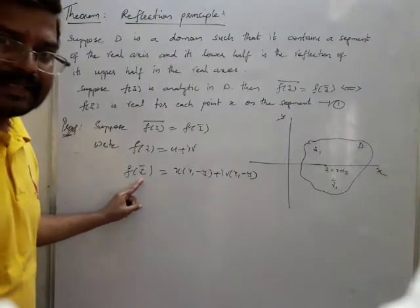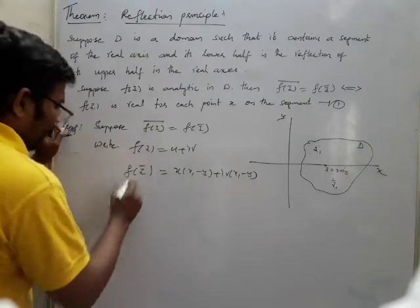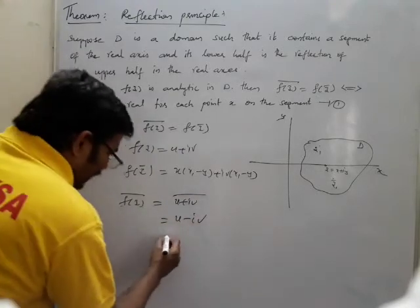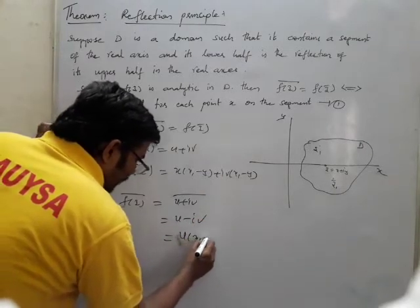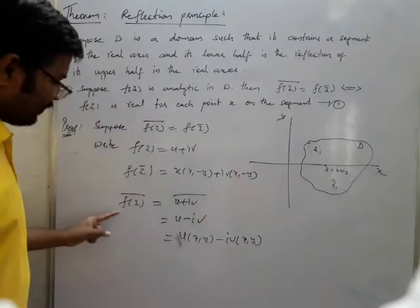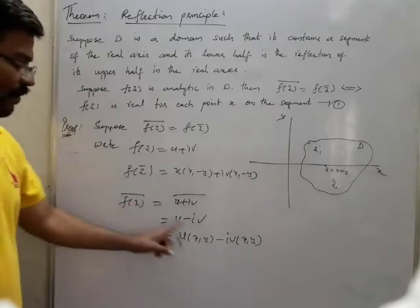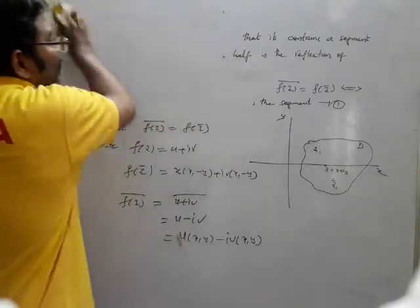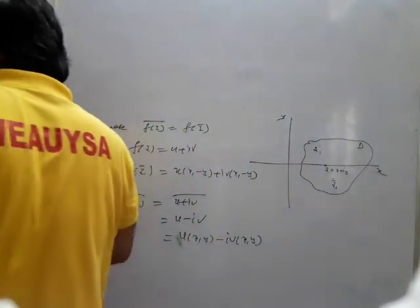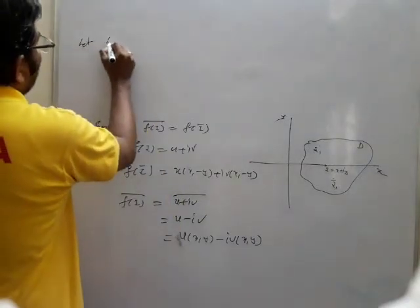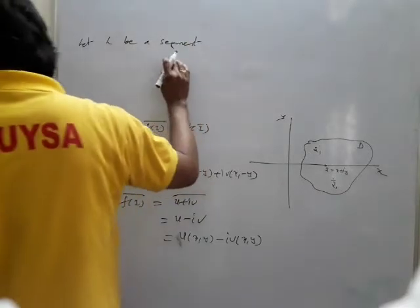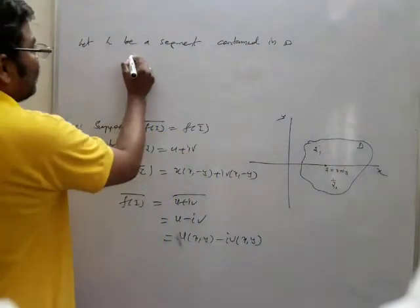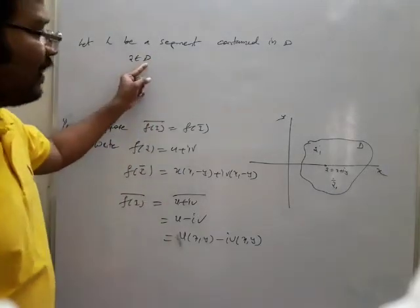Since z̄ = x - iy, we have f(z̄) = u(x, -y) + iv(x, -y). And overline{f(z̄)} = u(x, -y) - iv(x, -y). Let L be the line segment contained in D. For all z belonging to D, we consider all points contained in the line segment which are real.